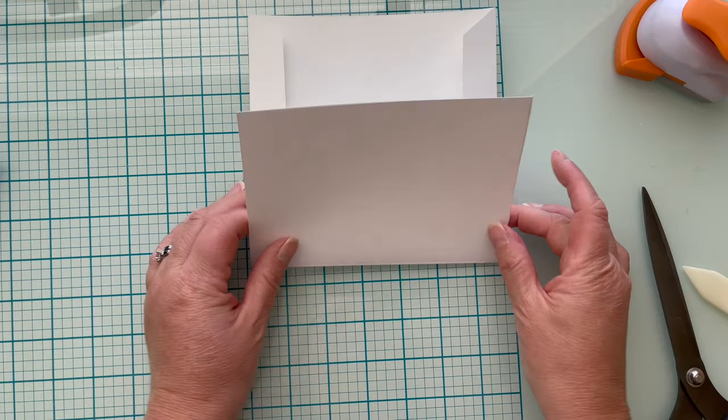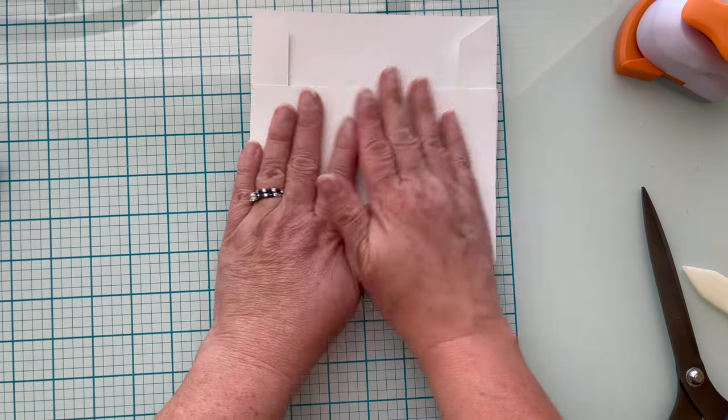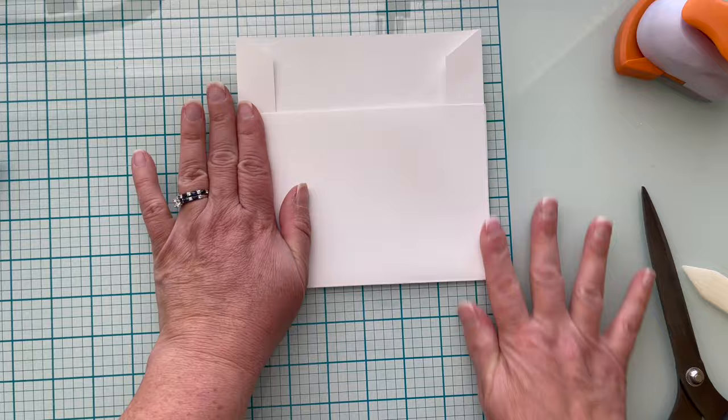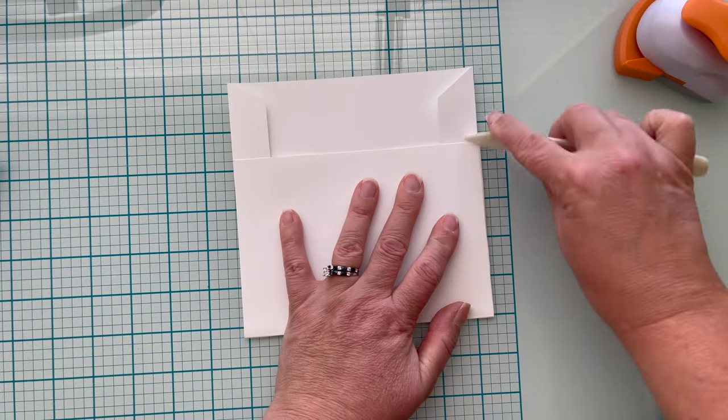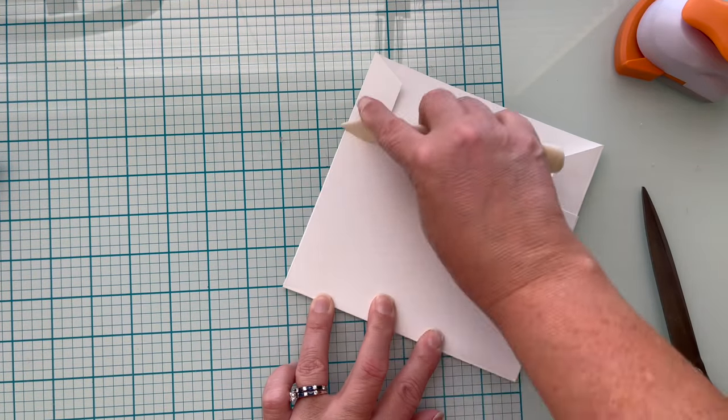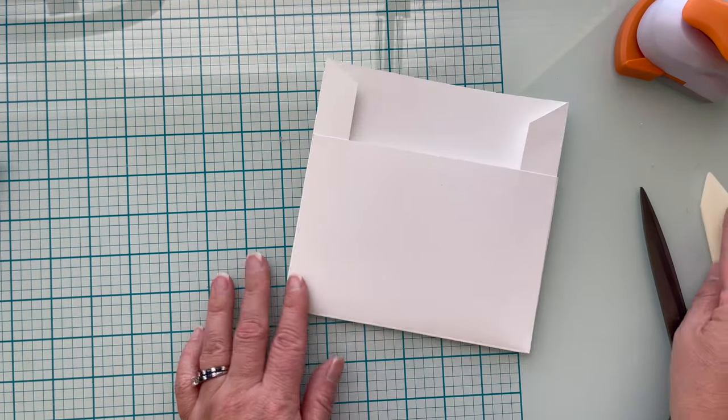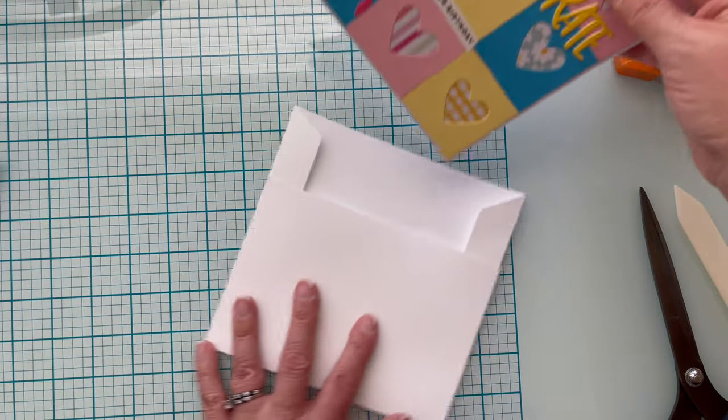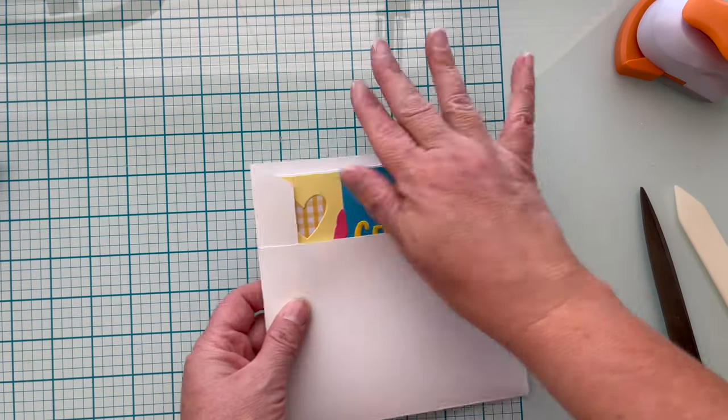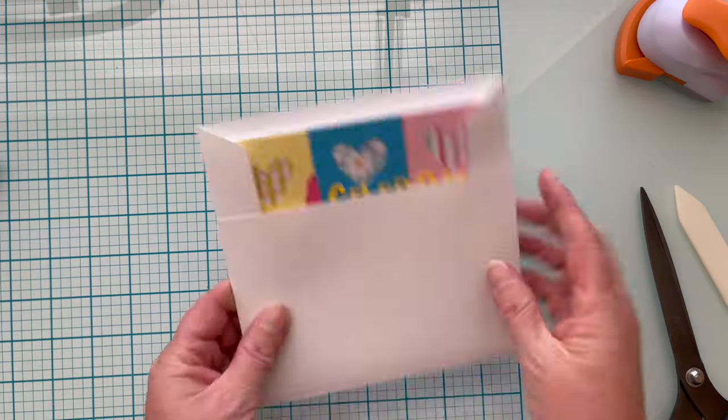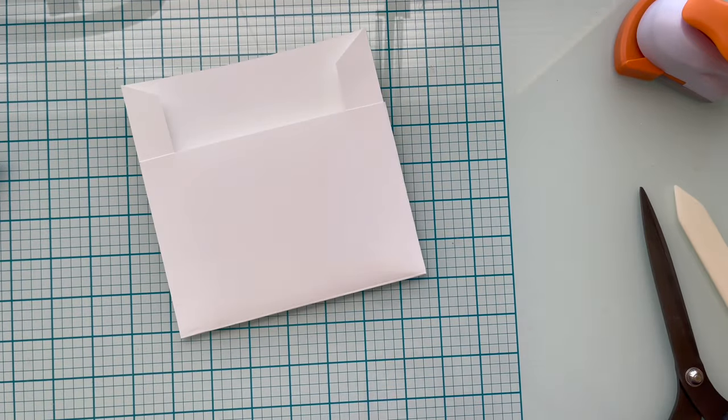You want to put it on the flap at the bottom because the tabs are higher and you would end up gluing something that you don't want to glue. Go ahead and burnish your glue or tape runner down to the flaps and you'll see that the six by six card fits perfectly. Now we just have to make the top flap.